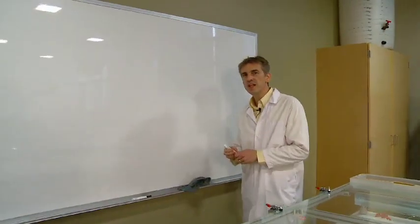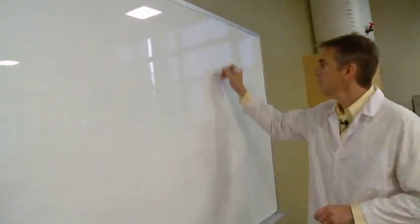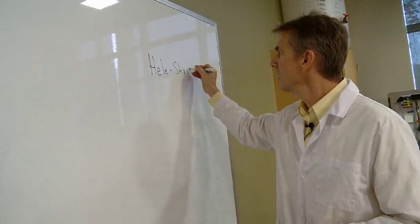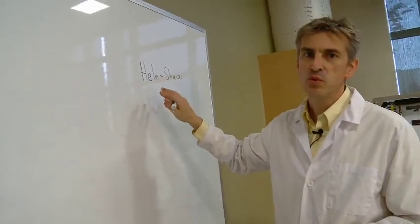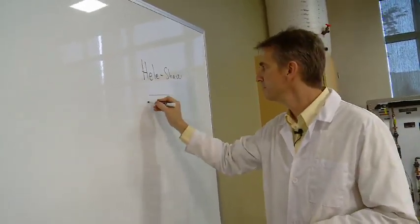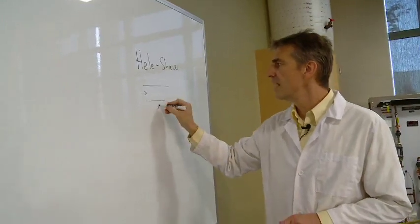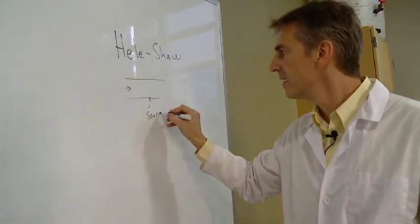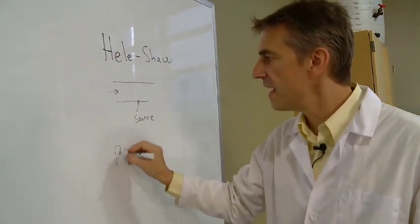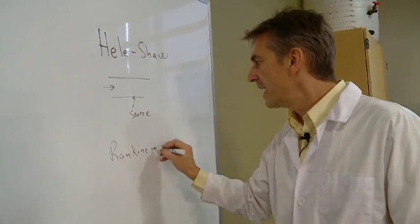This flow table is really Hele-Shaw flow. So Hele-Shaw flow is laminar flow between two parallel plates. And then we're going to inject dye as the source. So we're going to set up the Rankine half body.